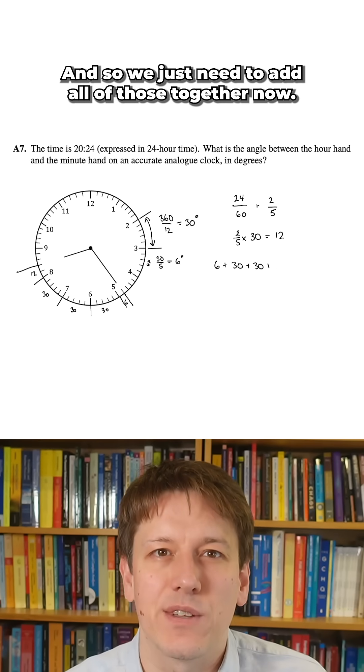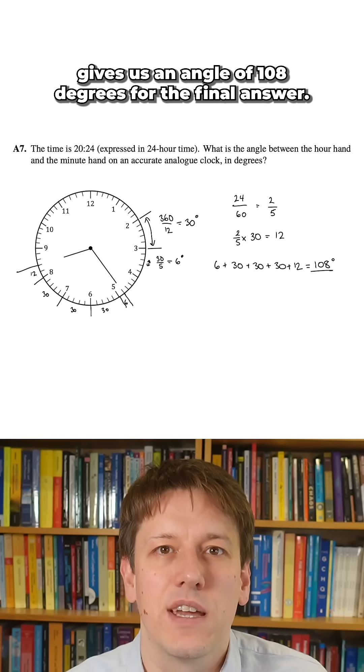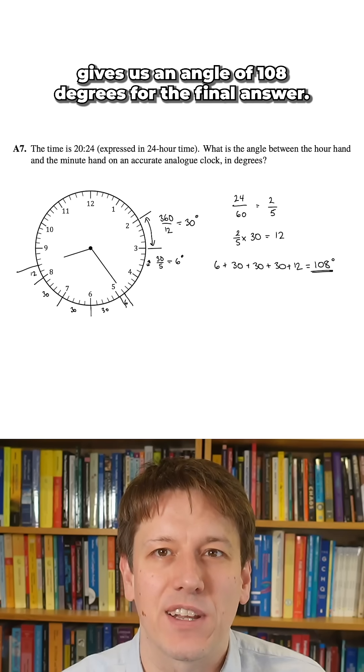And so we just need to add all of those together now, 6 plus 30 plus 30 plus 30 plus 12 gives us an angle of 108 degrees for the final answer.